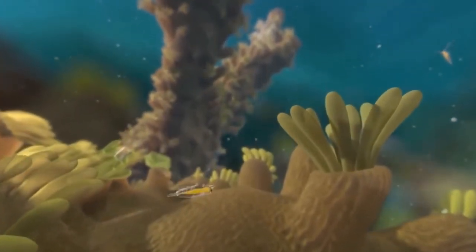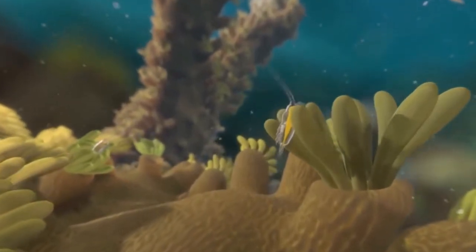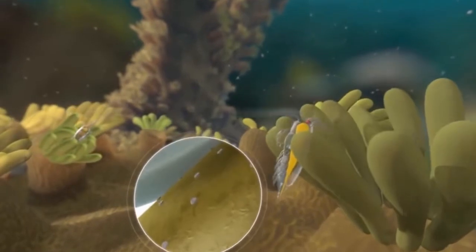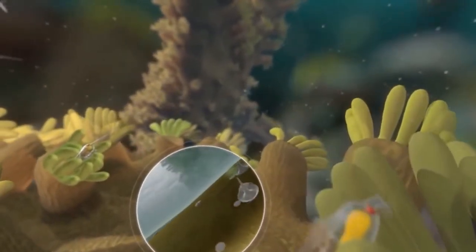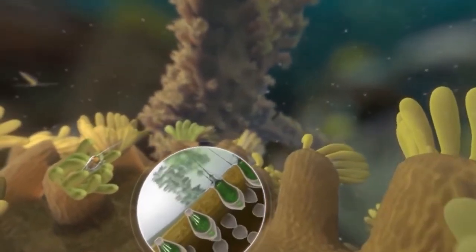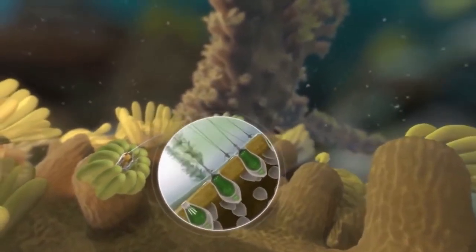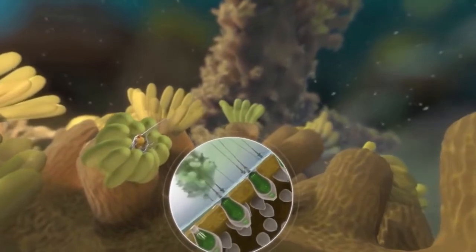Here a polyp captures its prey. Similar to the sting of its relative, the jellyfish, the coral harpoons its meal with microscopic hooks released from its tentacle. The polyp then draws the copepod into its mouth to digest.